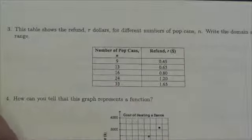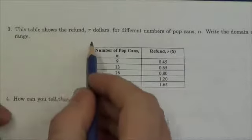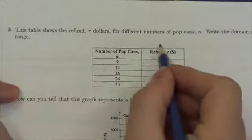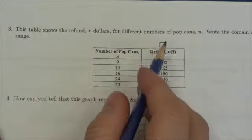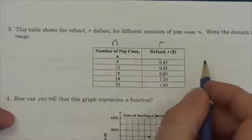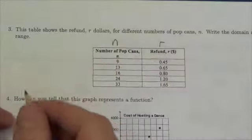Hi everyone, so for this question we're told that this table shows the refund R, in dollars, for different numbers of pop cans n. So here's n, we can actually write the domain and range.